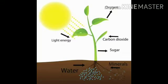Plants have specific needs like light, air, water, nutrients, and space. Almost all plants need these five things to survive.